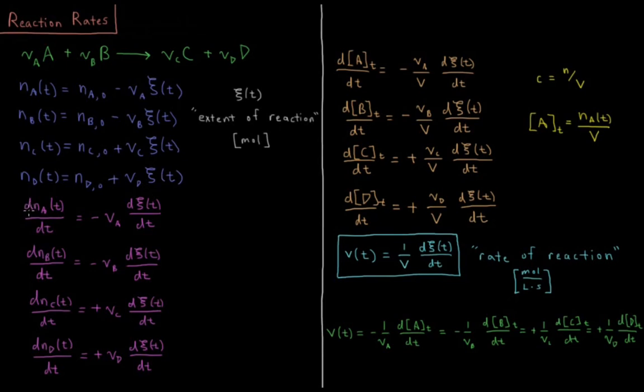If we want to look at the derivative of each of these number of moles with respect to time, the derivative of number of moles of A with respect to time is equal to, taking the derivative with respect to time of this expression, no time dependence in the initial number of moles but there is time dependence in xi. So minus nu A times d xi dt, decreasing over time based off of the speed of the reaction times minus nu A. Same thing for B: dNB dt equals minus nu B times d xi dt.